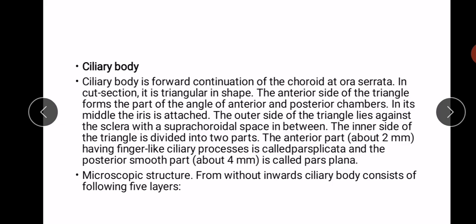The anterior surface of the triangle forms part of the angle of the anterior and posterior chambers. In its middle, the iris is attached. The outer side of the triangle lies against the sclera with a suprachoroidal space in between.